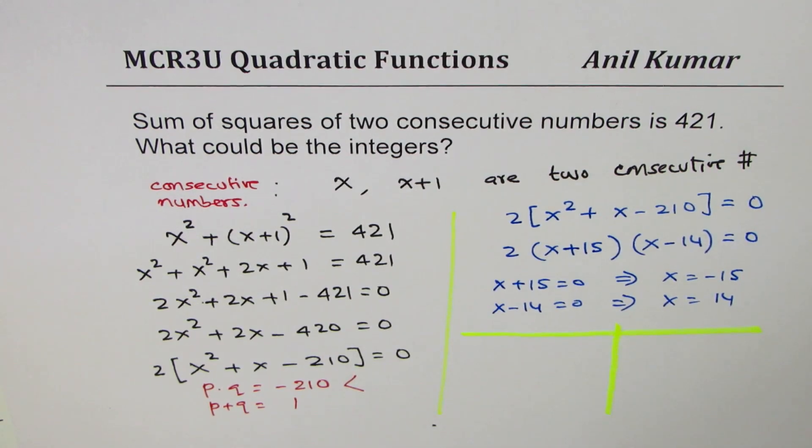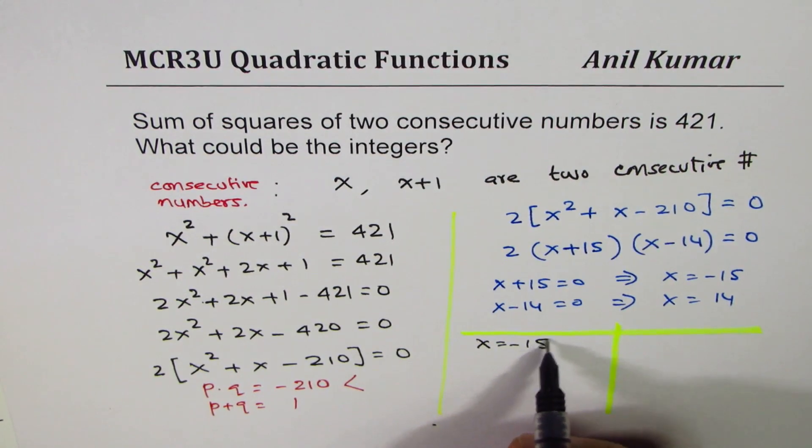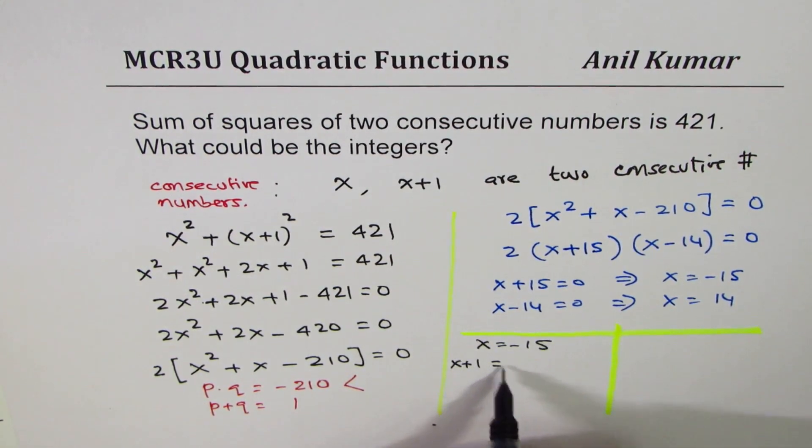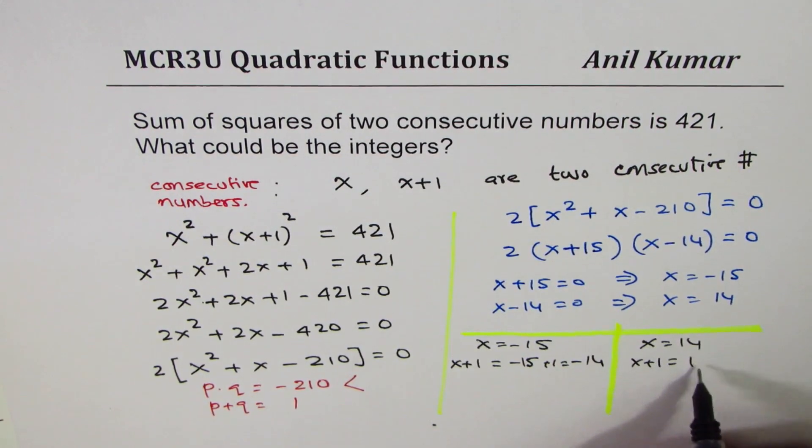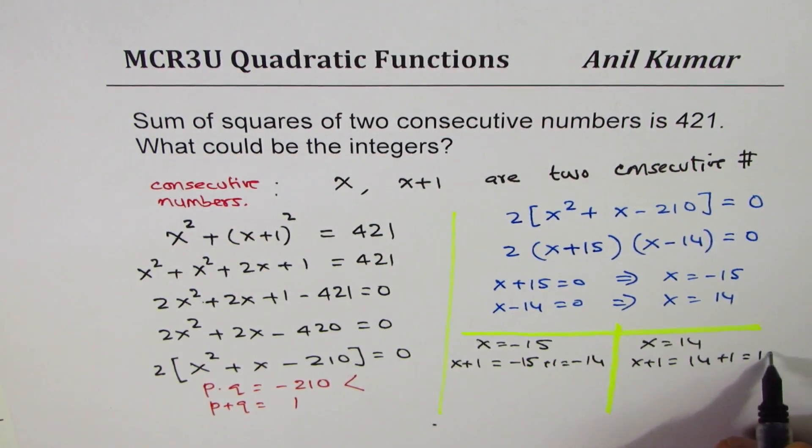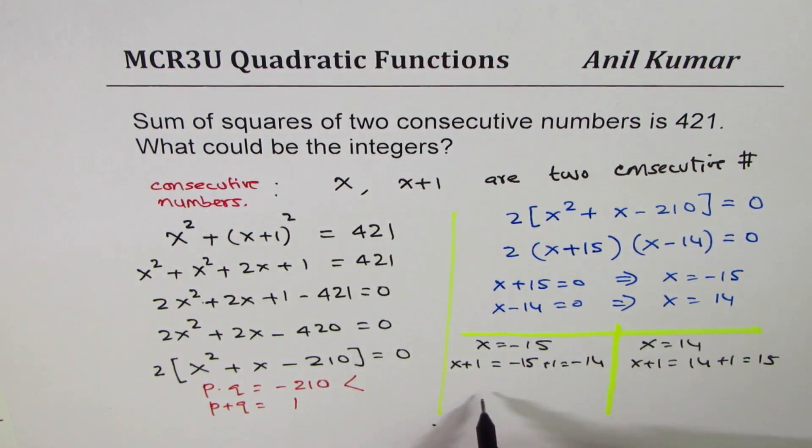So let me clearly write down what these sets are. If x equals to minus 15, what is x plus 1 equal to? Minus 15 plus 1 is minus 14, correct?